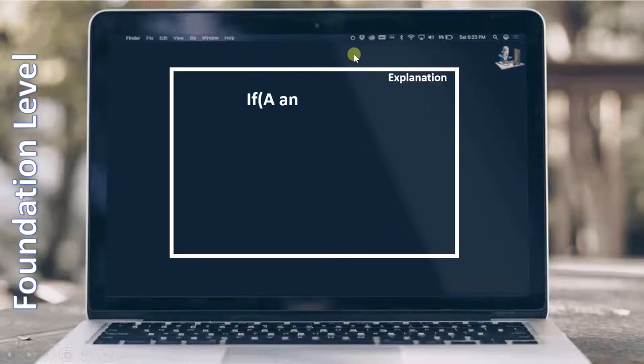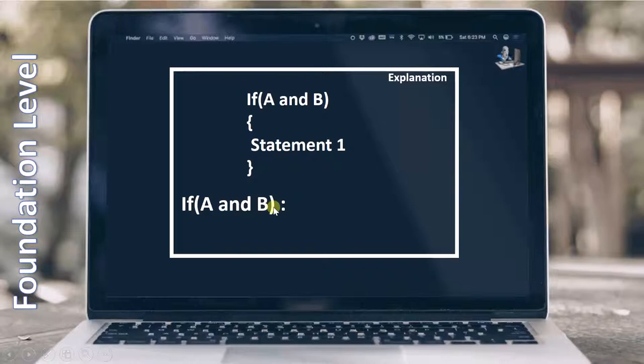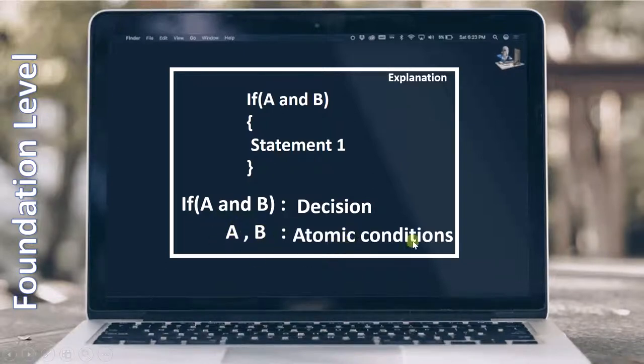Let's start with the decision itself. This is the same example which we have seen in the condition testing, where we have seen if A and B is nothing but a decision. And we have also seen that A and B as an individual entity are called atomic conditions.